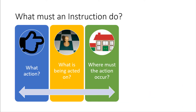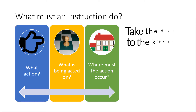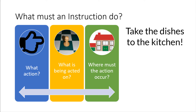So what must an instruction actually do? Well, an instruction needs to indicate three things. Number one, what action should be done? Number two, what is being acted on? And number three, where must the action occur? You use and hear instructions all the time. The statement 'take the dishes to the kitchen' is an example of an instruction. Here, the action is to take, the object being acted on is the dishes, and the way of the action involves the kitchen.